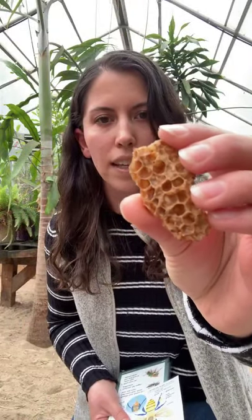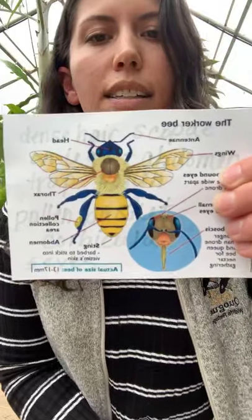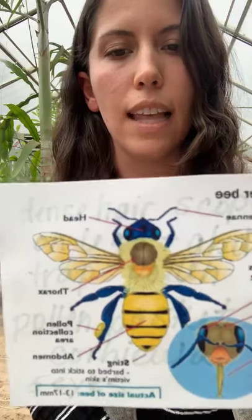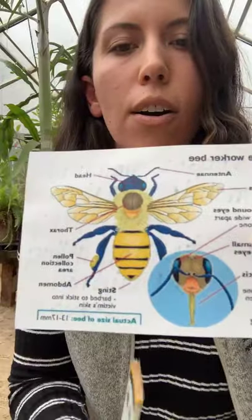Honeybees actually have to visit five million flowers just to make a pint of honey, which is pretty incredible. Bees are really important — if you look at this diagram, they have dense hair called scopa on their legs and abdomen that helps them trap the pollen, and a pollen basket on their leg called a corbicula. Bees actually have five eyes that help them find flowers and nectar. Most bees are solitary and live in the ground, and some only pollinate certain types of flowers.